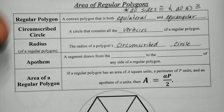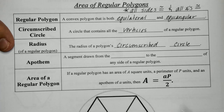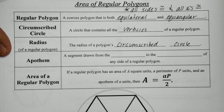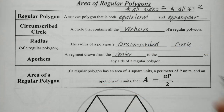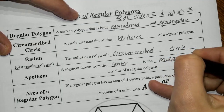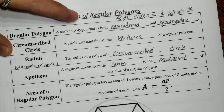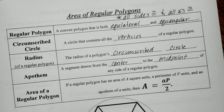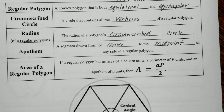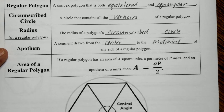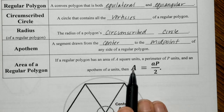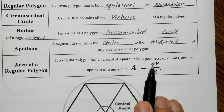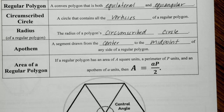The apothem is one thing we need in our formula. It is a segment drawn from the center to the midpoint of any side of the polygon. For a regular polygon with area in squared units, the area formula is: Area equals the apothem times the perimeter, divided by two. This is our formula.